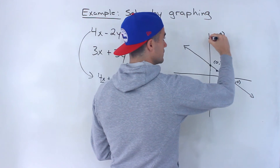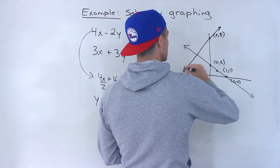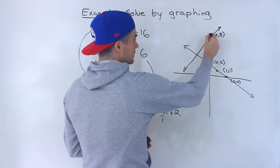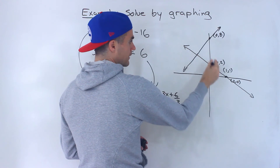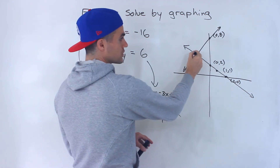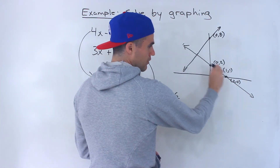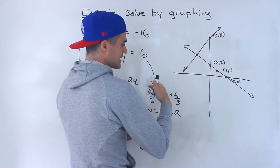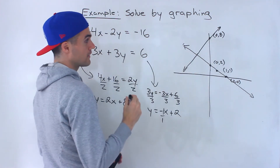Notice that the point of intersection is actually going to be somewhere over here. I could have even just roughly graphed these first just to know that the point of intersection was in this quadrant. To save time, I could have graphed these roughly, found out where the point of intersection is, and then gone in that specific direction.